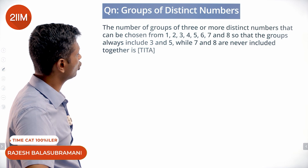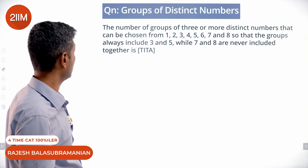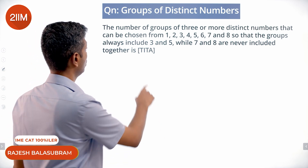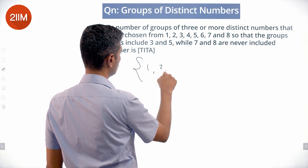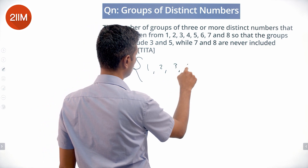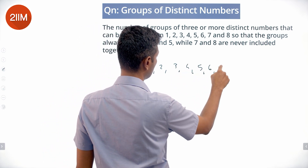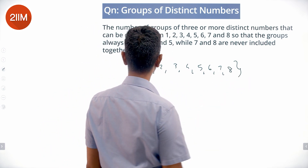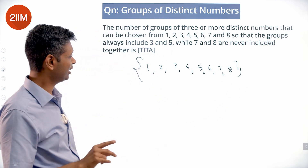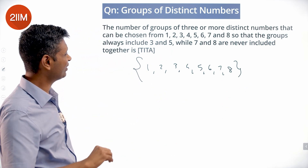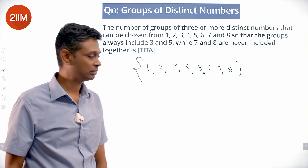The number of groups of three or more distinct numbers that can be chosen from one, two, three, four, five, six, seven, eight, so that the groups always include three and five, while seven and eight are never included.